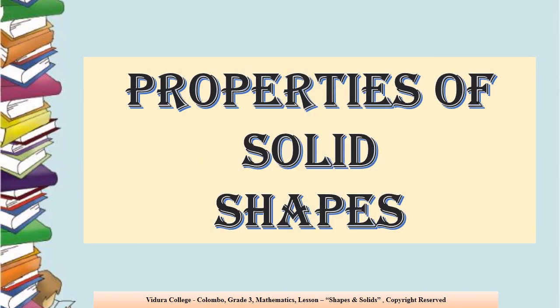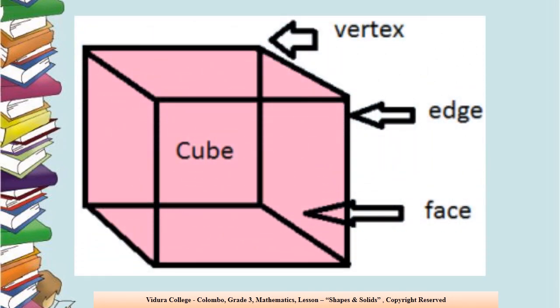Now we'll talk about properties of solid shapes. We talked about properties of shapes, and here we are talking about properties of solid shapes. Can you see a picture of a cube? Here you have to learn some new words. First: vertex means corner. And edge means side. And face — you already know. So: vertex, edge, and face.